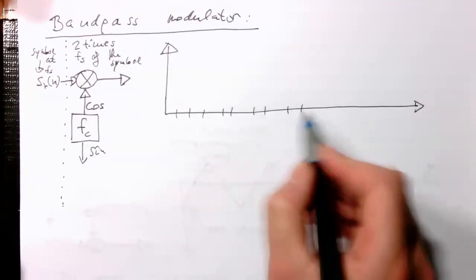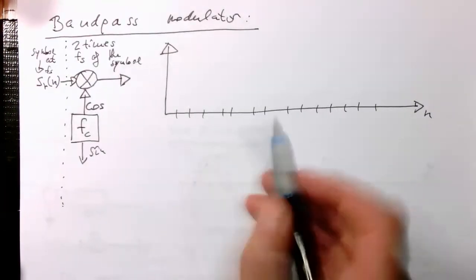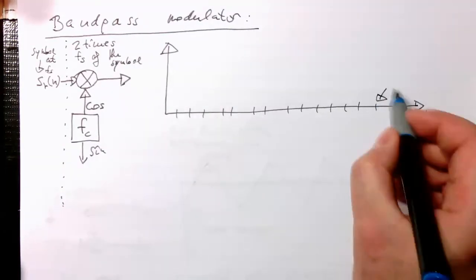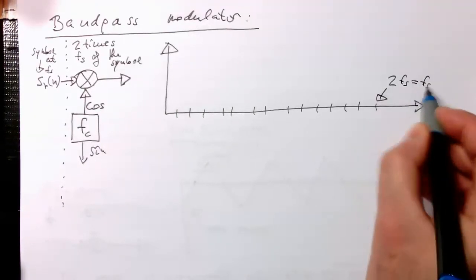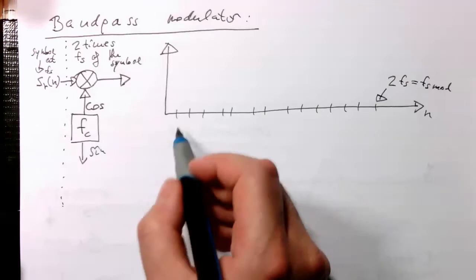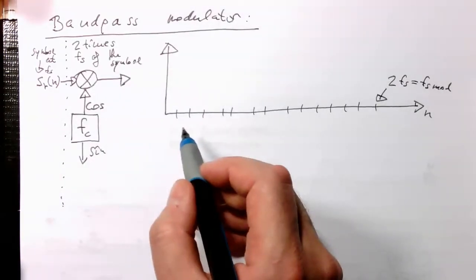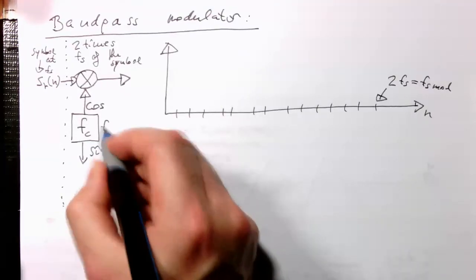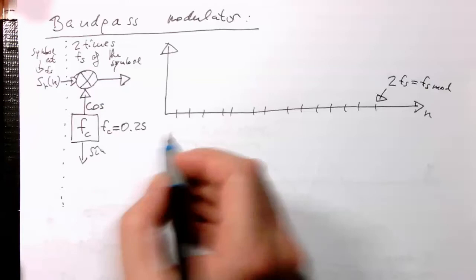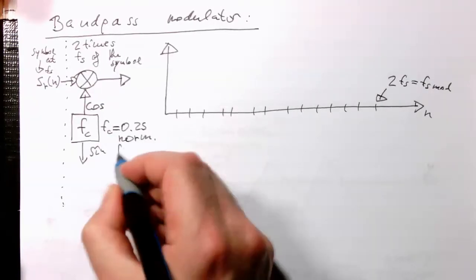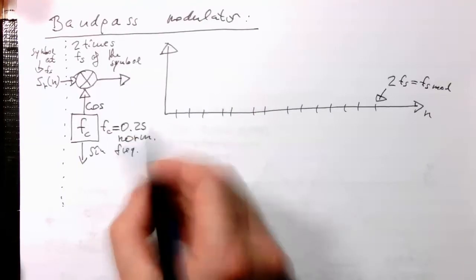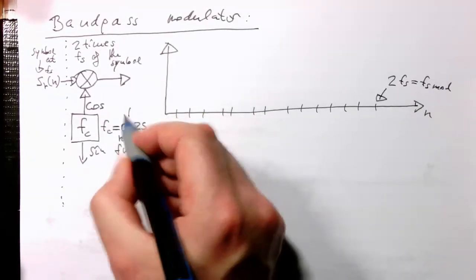Let's put sample points on this axis. These sample points are sample points of two times fs, or fs_mod — the modulator sample points. Remember the period here is 0.25. The carrier frequency fc is defined as 0.25 in normalized frequencies, which means the period is four samples.